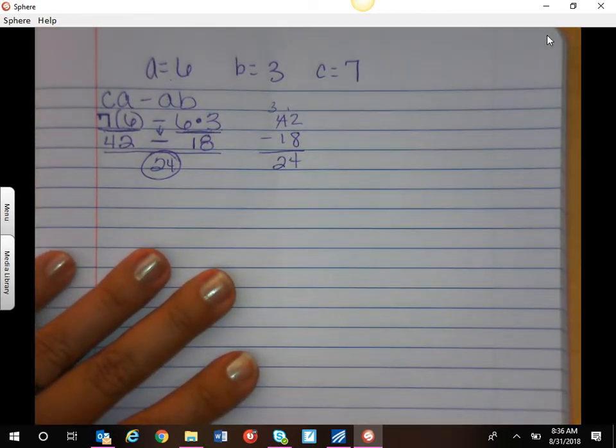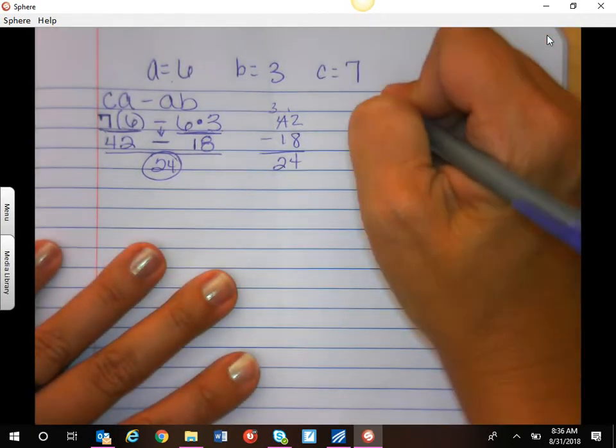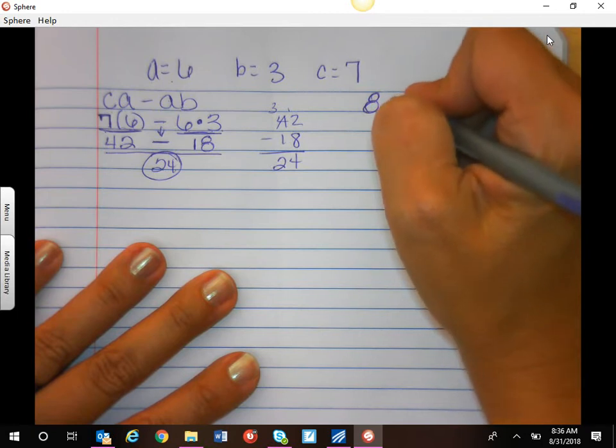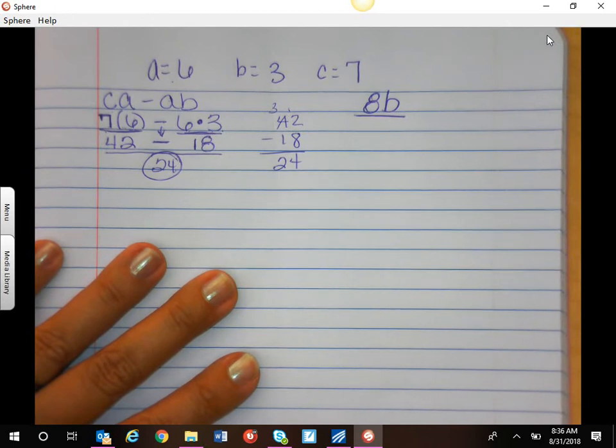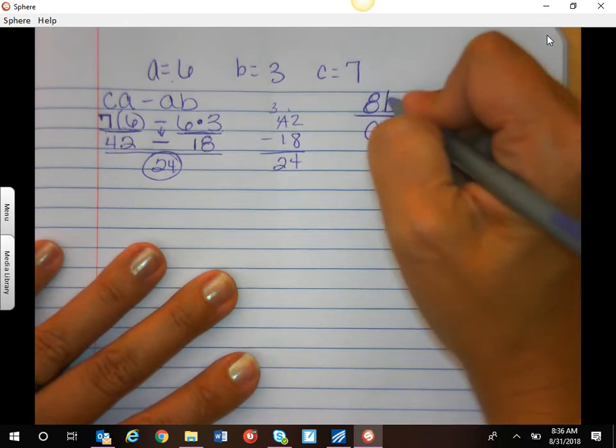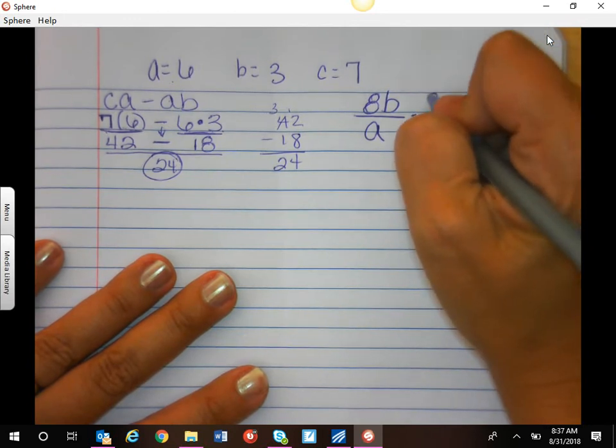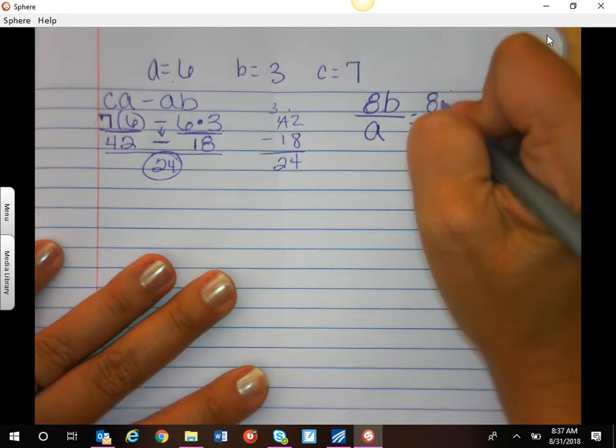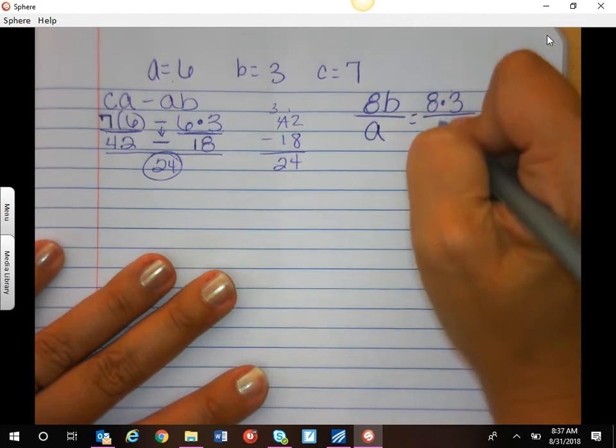Okay? I have one more for you to try. Same letters. If I gave you, I'm going to write it a little different. 8B³ over A. Again, multiplying. 8 times, in this case 3³, over A. Now, remember, this fraction means divide. So we're going to plug in our number, 8. You can use a dot or a parenthesis. 3 times 3 times 3, over 6.